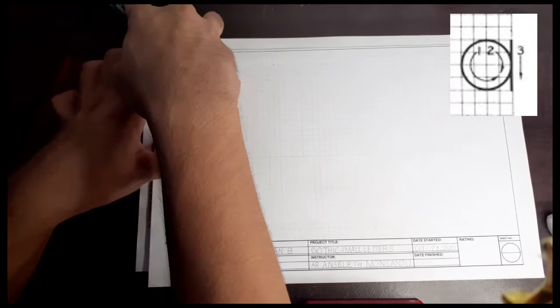Spacing of the grid lines from the borders must be 1 cm each. And the spaces of the grid lines must be 0.5 cm.